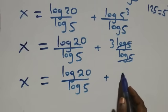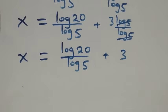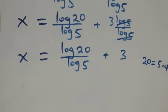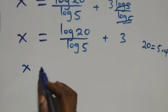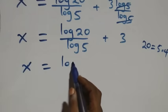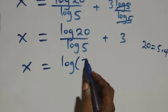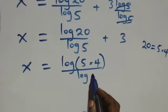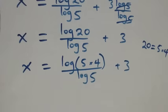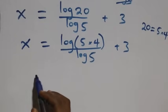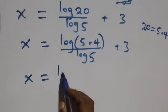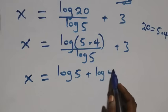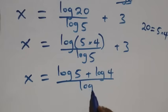From here we can express twenty as five times four. So what we have becomes x equals to log five times four over log five, plus three. This follows the law of logarithms, giving x equals to log five plus log four, over log five, plus three.